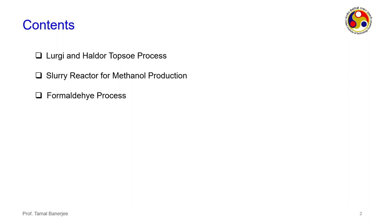With respect to methanol we will see the Lurgy and the Haldor Topsøe process. Lurgy has designed a specific reactor, while Haldor Topsøe is a renowned multinational company that has also developed a methanol process. Then we move to a new innovation called the slurry reactor for methanol production, and then we complete methanol and move ahead to formaldehyde, which has a single process starting from methanol as raw material.